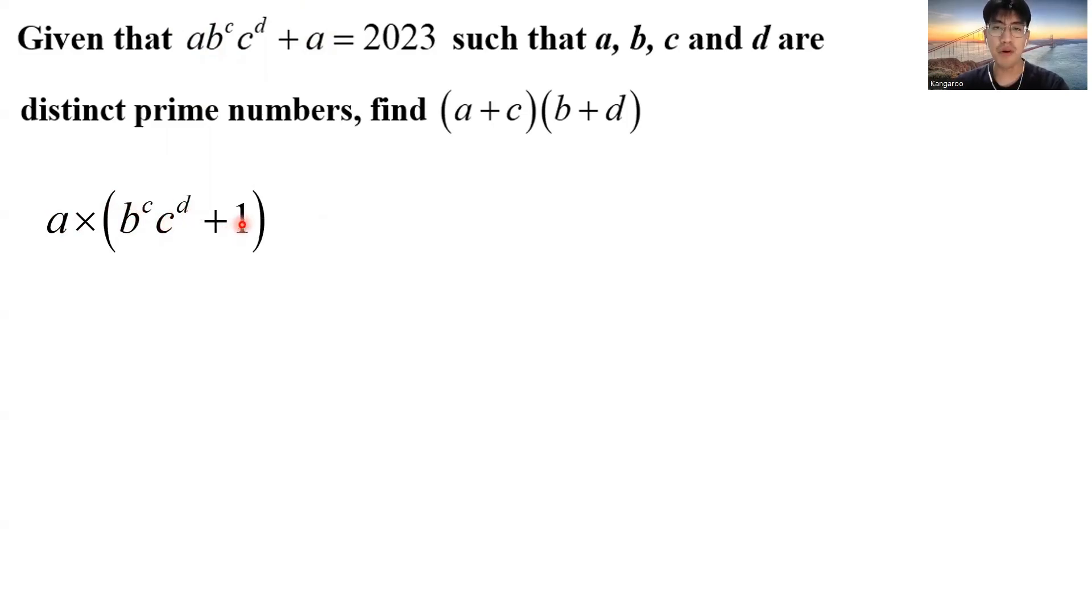Before the RI exam this year, I have reminded you to memorize the prime factorization of 2023. Why is that? This is where it will become useful. Because the prime factorization of 2023 is 7 times 17 squared. If you compare this with this, we see that a must be either 17 or 7 because a must be a prime number. So now I have two cases for a. So let's check which one is correct.